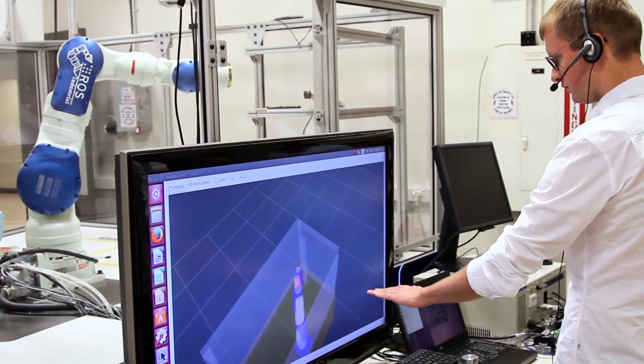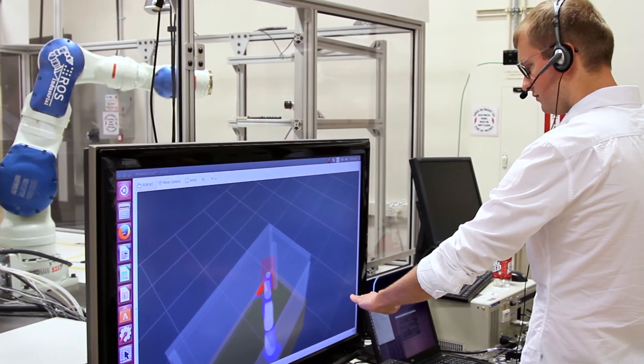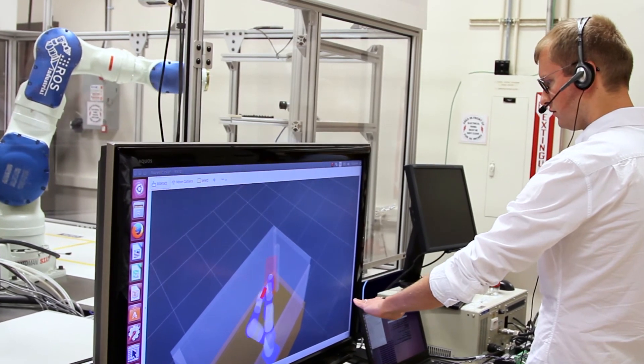We use a Leap Motion Controller to track operator's hand. The hand position and orientation are translated into the frame of the robot end effector.